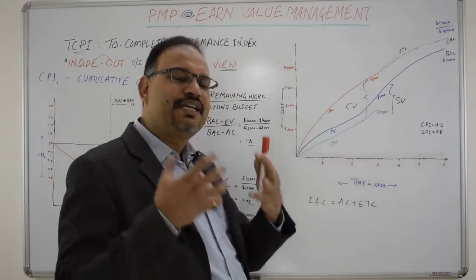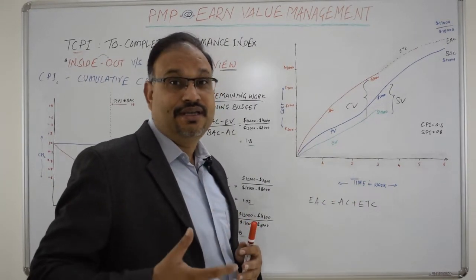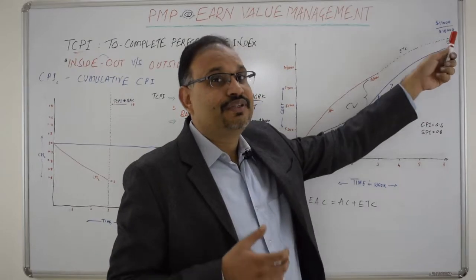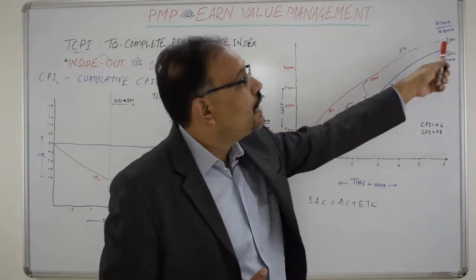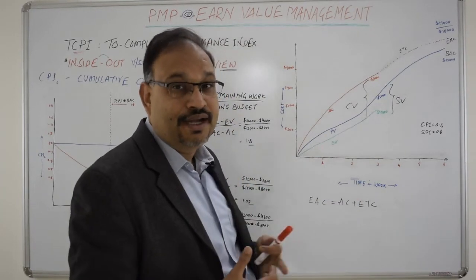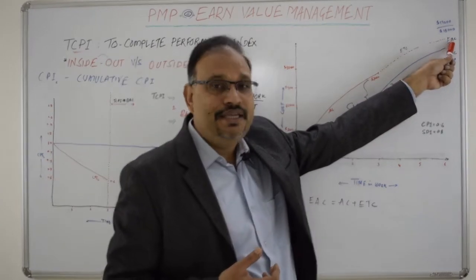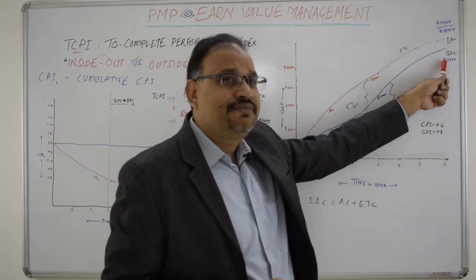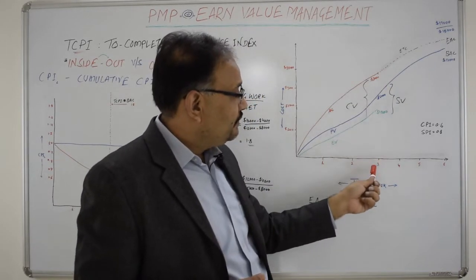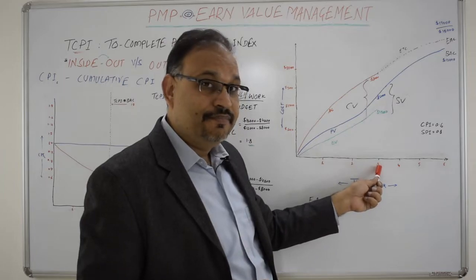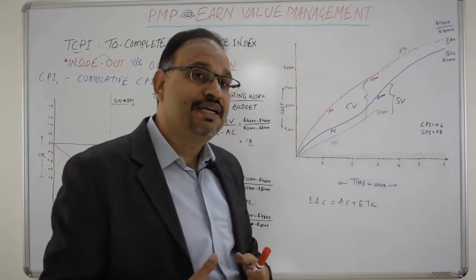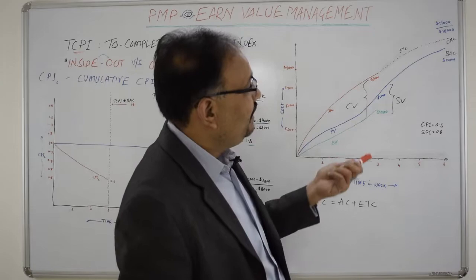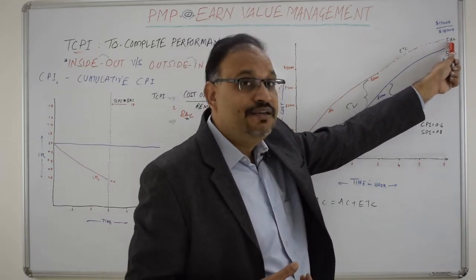At the end of week three, the project can use forecasting methods based on assumptions and scenarios to figure out the likely Estimate at Completion (EAC) budget. This gives an inside-out view — knowing the trade-offs internally, and projecting the EAC outward. Alternatively, the project may decide to catch up with the original BAC regardless of the current CPI, and for the remaining duration understand the desired cost performance level needed to meet that target.